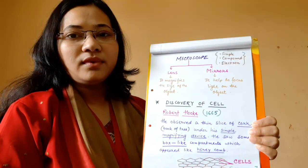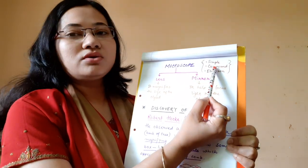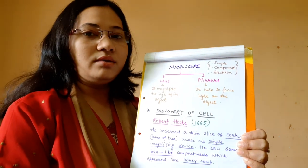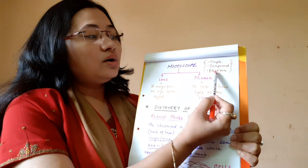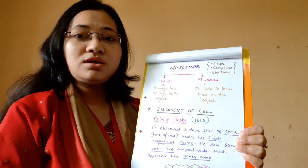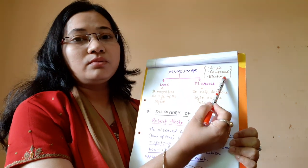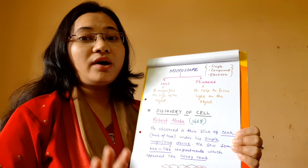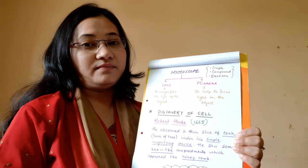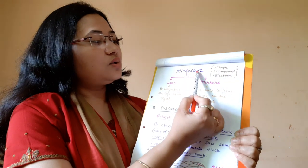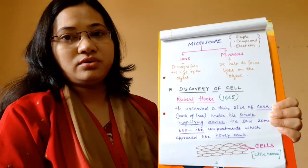These devices are called microscopes. There are simple microscopes and compound microscopes, which are present in our school biology laboratory. There are also electron microscopes, found in research centers. With an electron microscope, we can see the magnified image of objects as tiny as a bacterium.